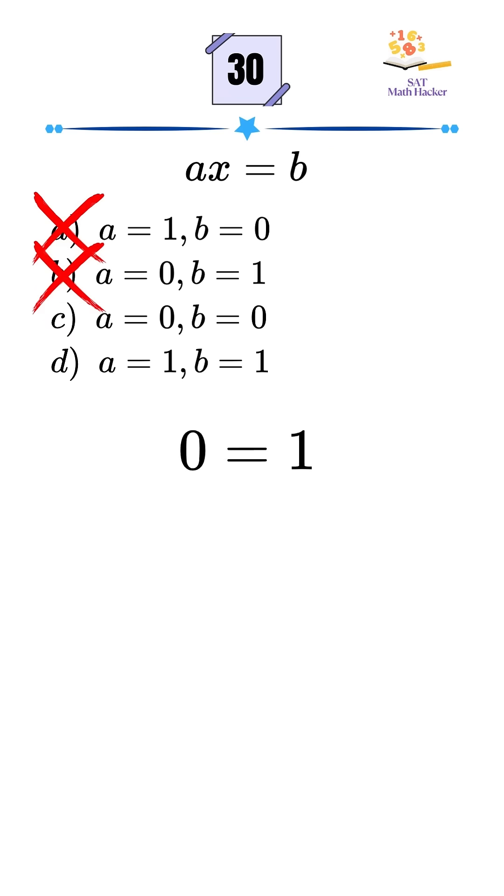Option C. A equals 0 and B equals 0. Now we get 0X equals 0, which simplifies to 0 equals 0. That's always true, no matter what X is. That means infinite solutions.